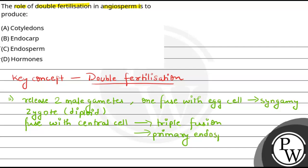Triple fusion results in the formation of the primary endosperm nucleus, which after mitosis forms the endosperm. So we have syngamy and triple fusion, together making double fertilization. Therefore, the correct answer is option C — endosperm. Best of luck, thank you.